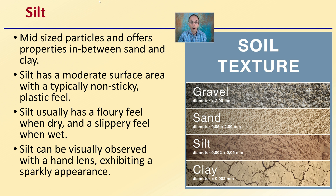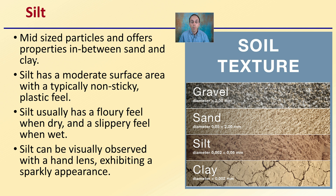Silt is a mid-sized particle and offers properties in between sand and clay. It has a moderate surface area with typically a non-sticky, plastic feel — usually a flowery feel when dry and a slippery feel when wet. Silt can be visually observed by hand lens, exhibiting a sparkling appearance, and is typically a more sought-after soil for growing crops.